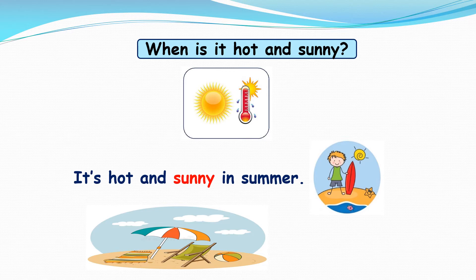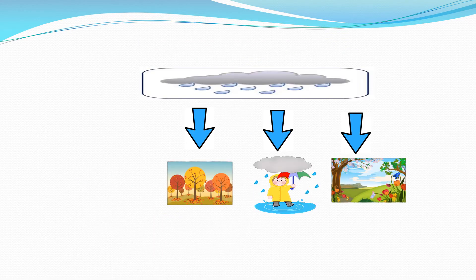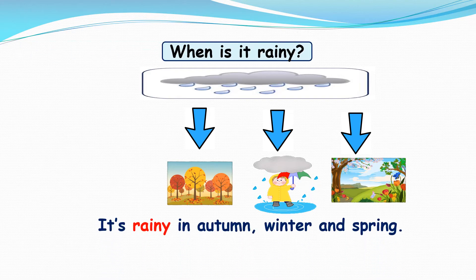Can you say which season is the first one? That's right, it's autumn. Picture number two — it's rainy in winter. And it's cold in spring, and we can see flowers. It's rainy in three seasons: autumn, winter, and spring.